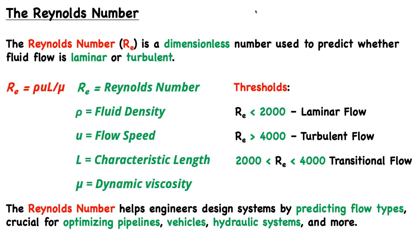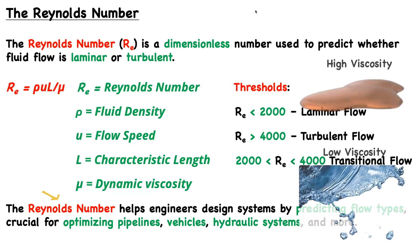The Reynolds number helps engineers design systems by predicting flow types, which is crucial for optimizing pipelines, vehicles, hydraulic systems, and much more. The Reynolds number is fundamental to fluid dynamics.